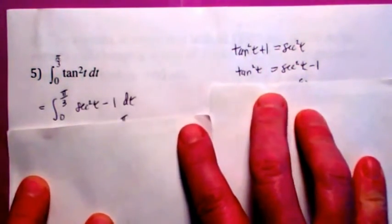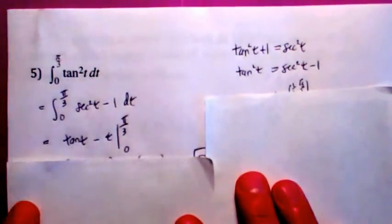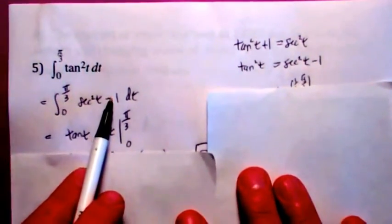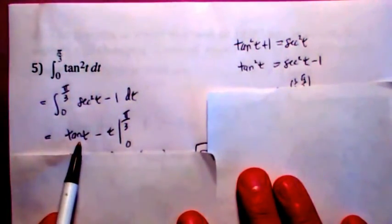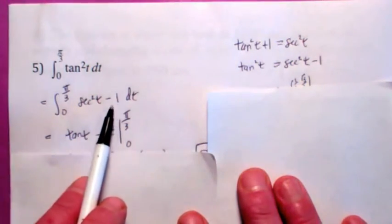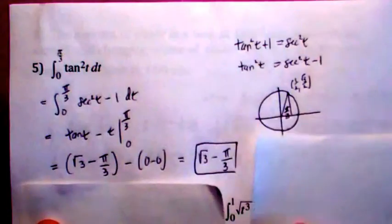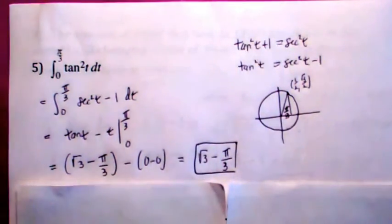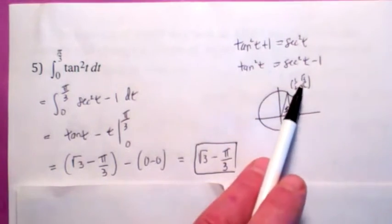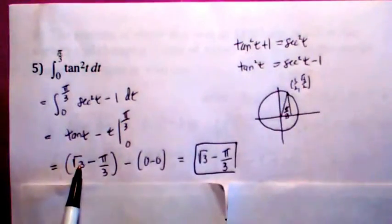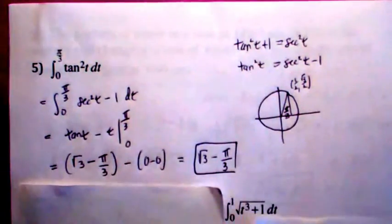You replace it with secant squared minus 1. The antiderivative of secant squared t is tangent, and the antiderivative of negative 1 is negative t. Evaluate between 0 and pi over 3. The tangent of pi over 3 is radical 3, so you get radical 3 minus pi over 3. That's your answer — pretty sneaky.